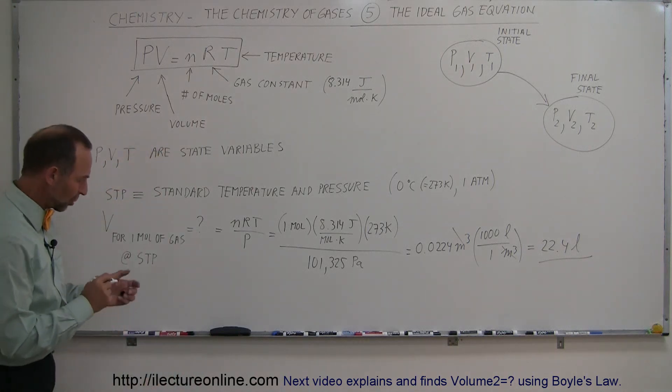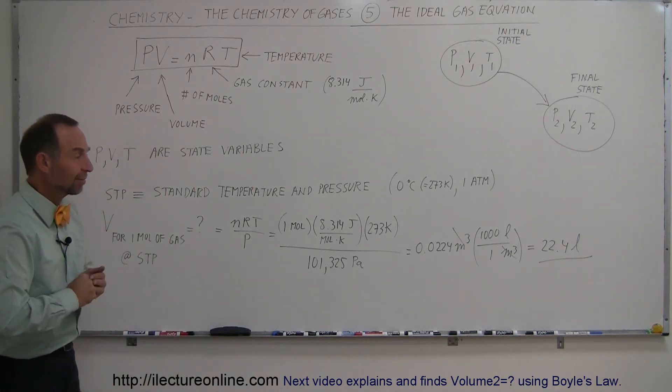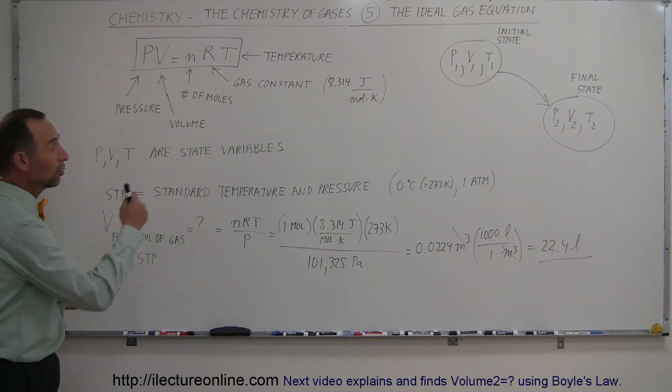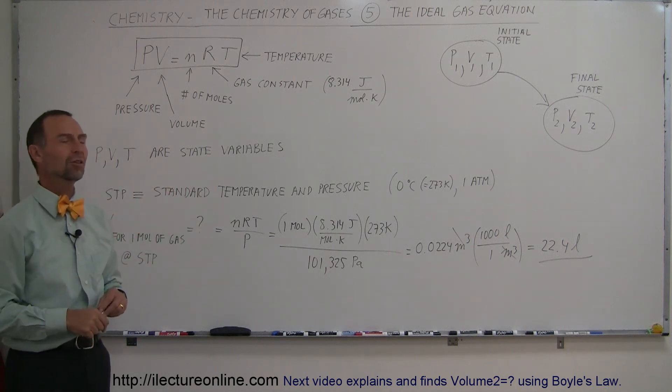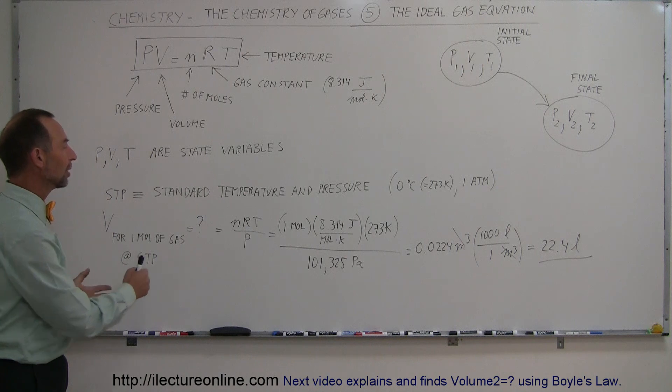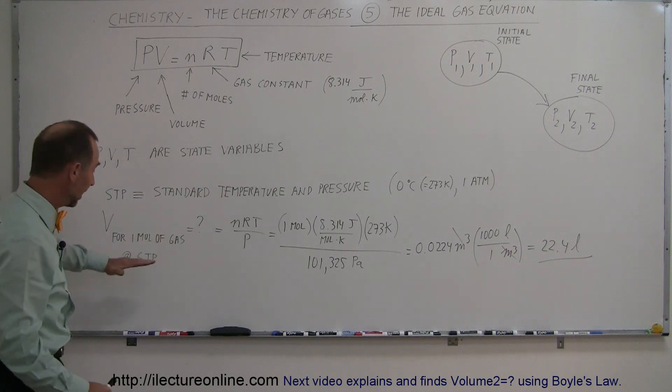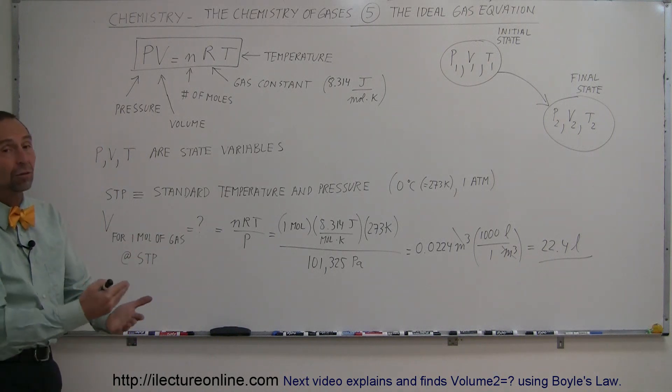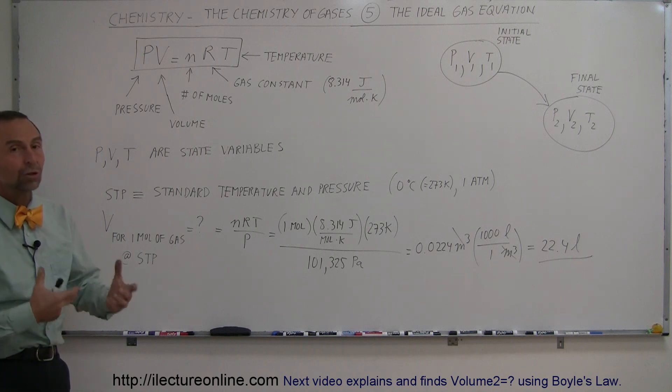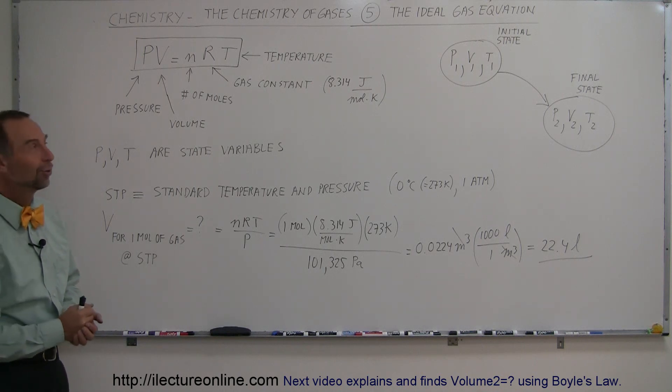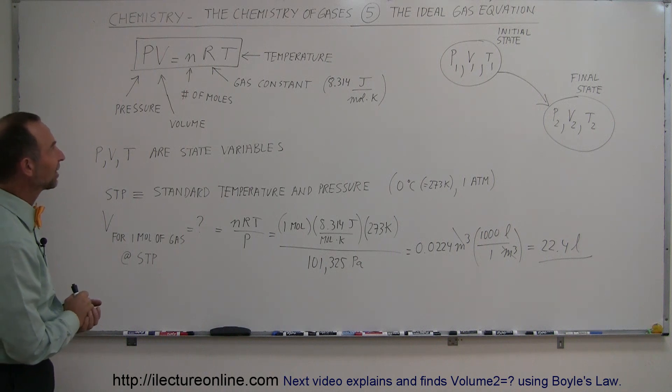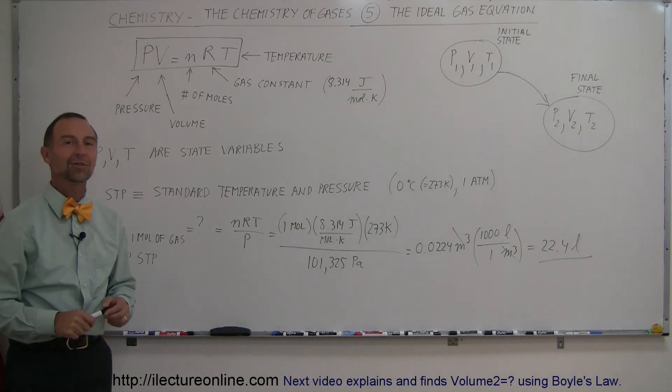You may have seen in your chemistry book, or heard in your chemistry class, that one mole of a gas occupies 22.4 liters at STP conditions, and now you know why. The relationship between the three state variables, the gas constant, and number of moles gives us this. It makes it really easy to find either the volume, temperature, or pressure of a gas when you know everything else. And there's your introduction to the very famous ideal gas equation PV equals nRT.